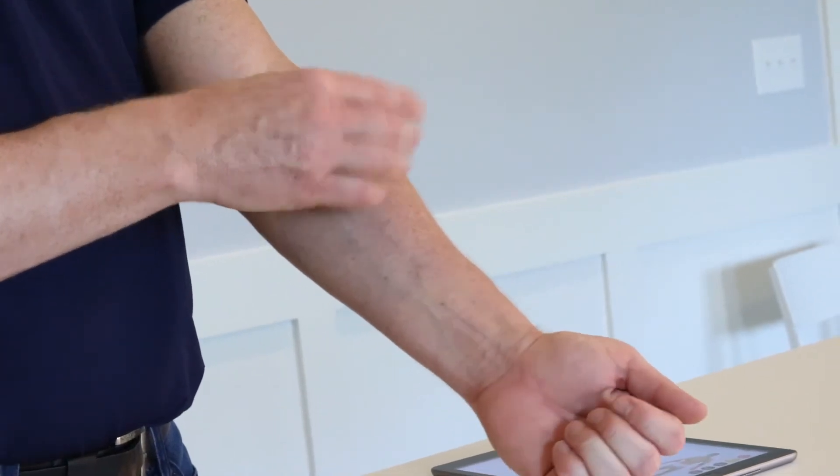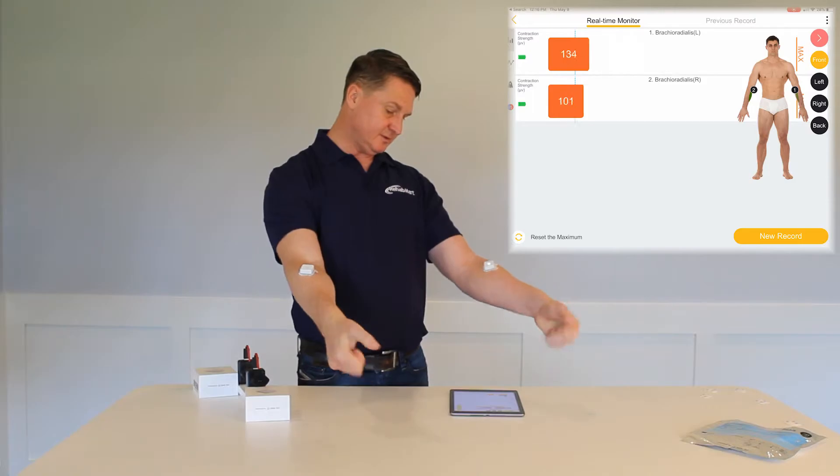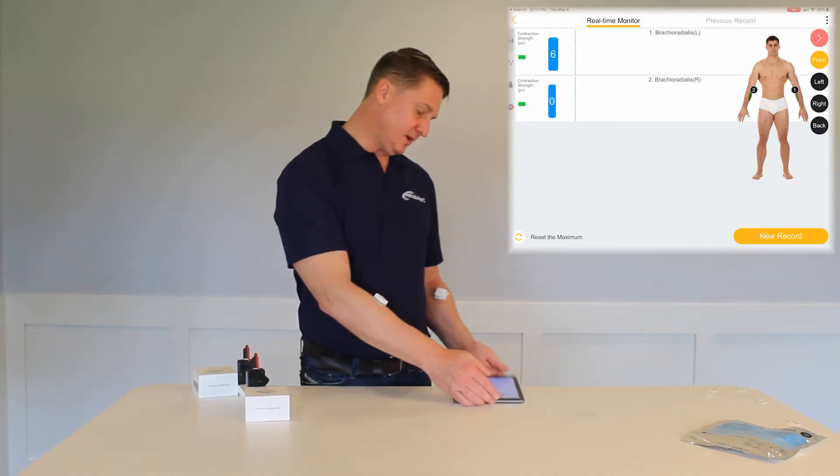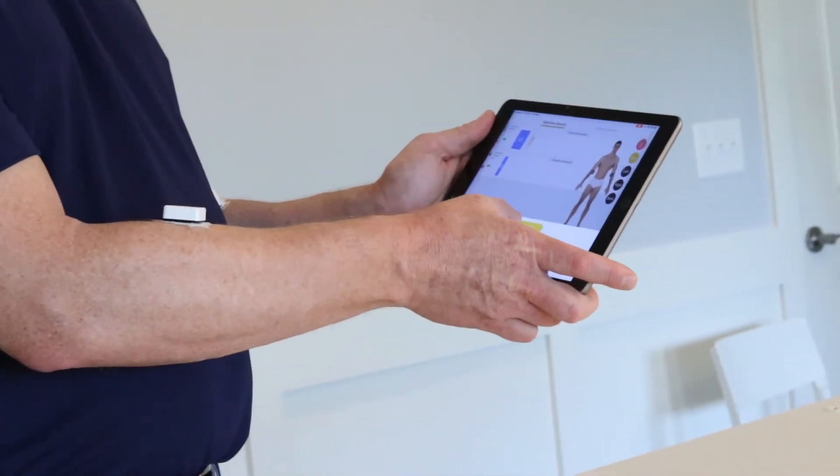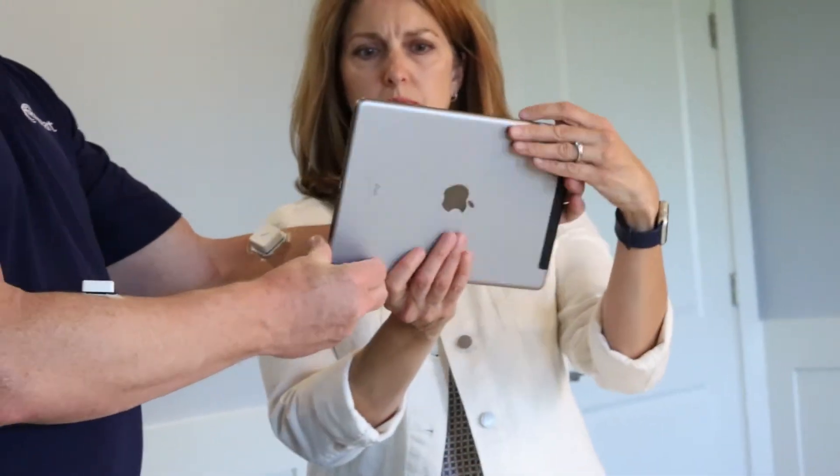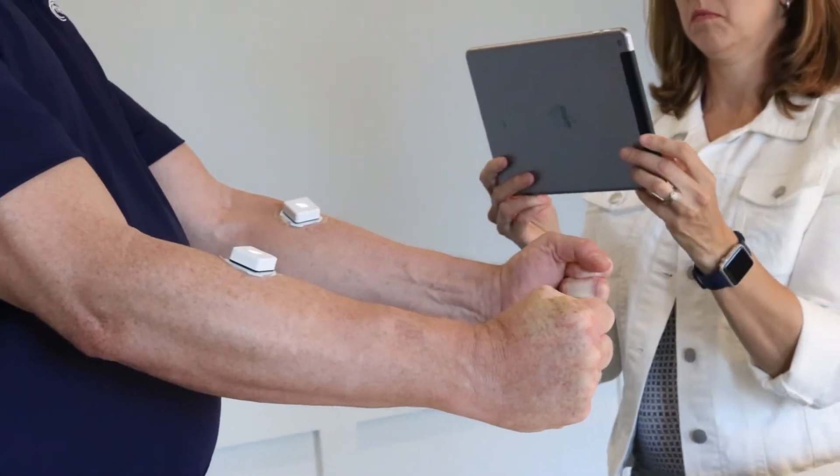Now I can actually see I've got recordings going on both brachioradialis and I can choose to do a session. I'm going to click new record. For this one, I want to ask Megan to come up and hold the iPad because we're going to do a video record. Megan's going to hold the iPad and I'm going to start recording.